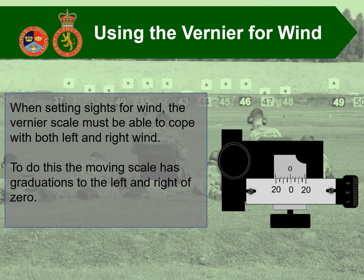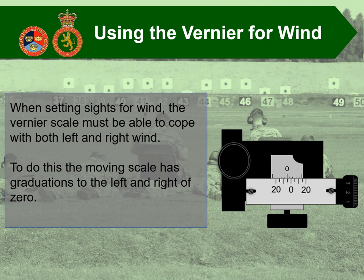As you can see, there was a slight sight adjustment. This is showing one minute of left wind. Anywhere that the moving scale zero is left of the fixed scale zero shows left wind. At the moment, the zero is between the fixed scale of 0 and 5 and lining up with the first graduation — that denotes one minute left wind. The following examples show 2 minutes left wind, 3 minutes left wind, 4 minutes left wind, and 5 minutes left wind.